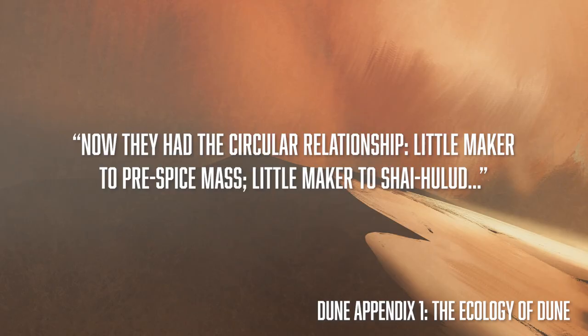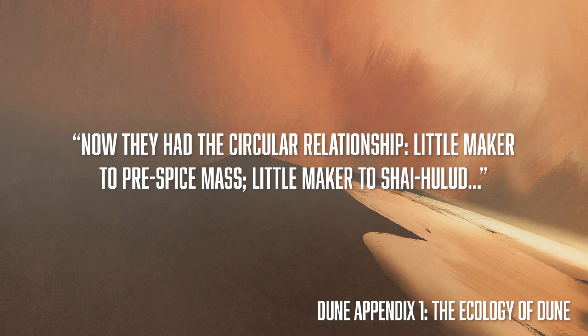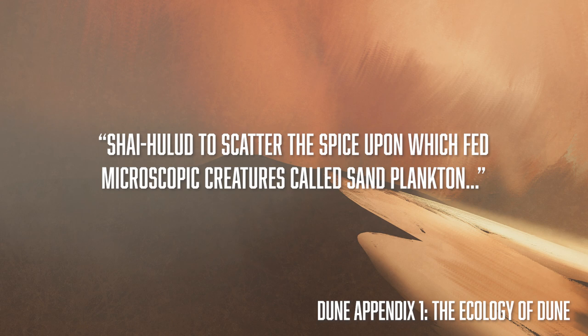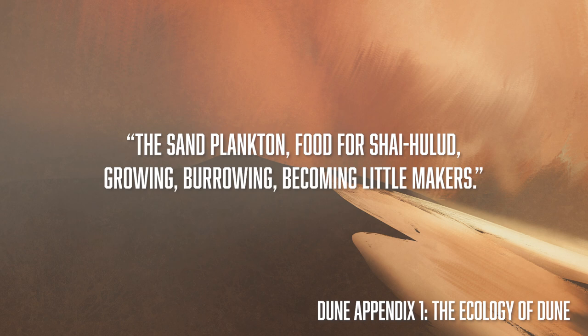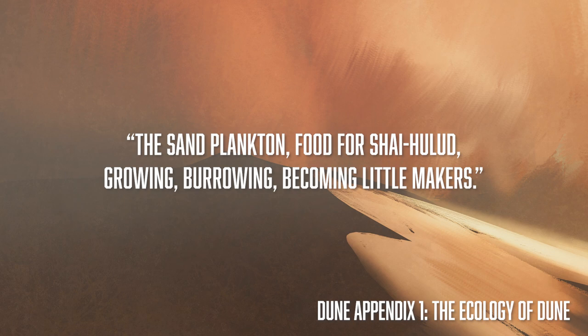Now they had a circular relationship: little maker to pre-spice mass; little maker to Shai-Hulud; Shai-Hulud to scatter the spice upon which fed microscopic creatures called sand plankton; the sand plankton, food for Shai-Hulud; growing, burrowing, becoming little makers.